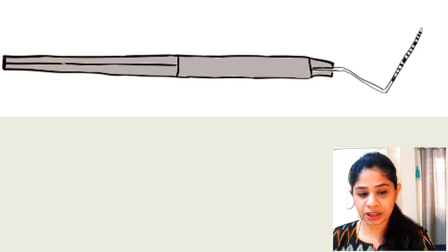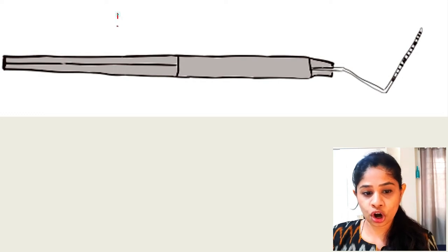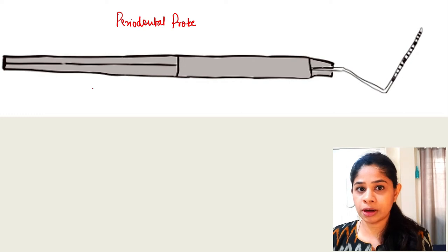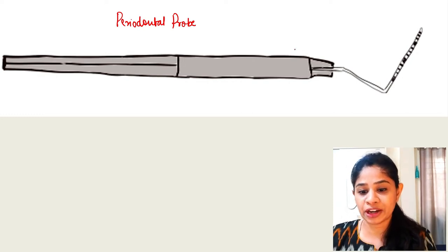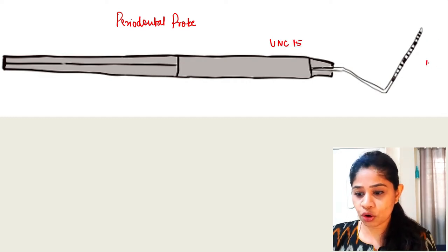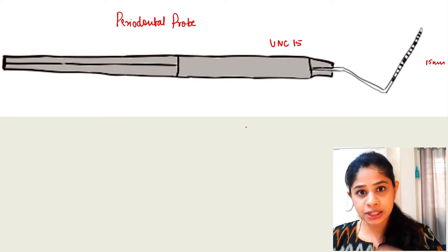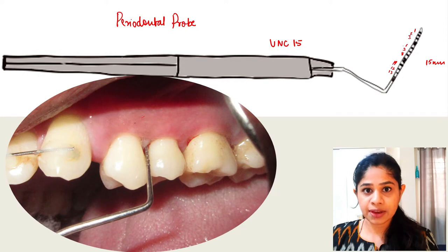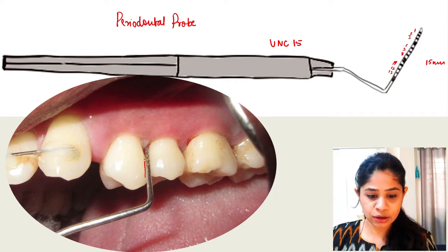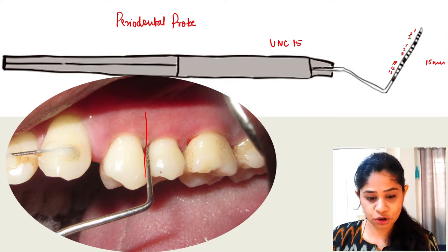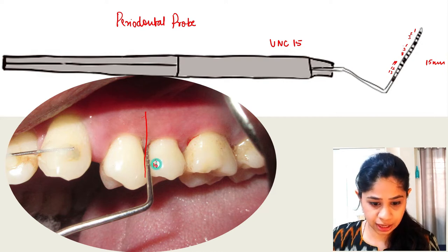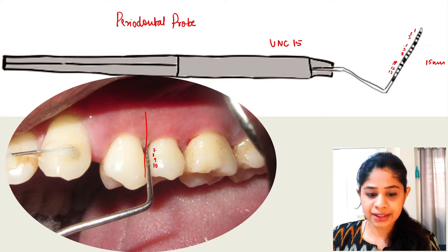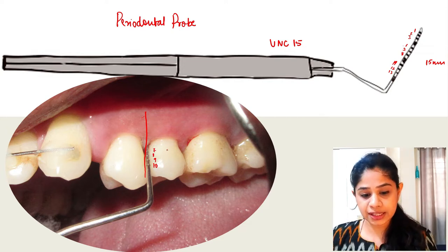First let's talk about probing depth. We are going to use something called a periodontal probe. This is an example of a manual periodontal probe which is UNC-15, one of my favorites because it has a working end of 15 mm, so you can always measure deep periodontal pockets. Here we have inserted the probe along the distal line angle of the first premolar. This is a Williams periodontal probe with markings up to 10. Based on the visible markings at 7, 8, 9, and 10, we can say this particular site has a probing depth of 6.5 mm.